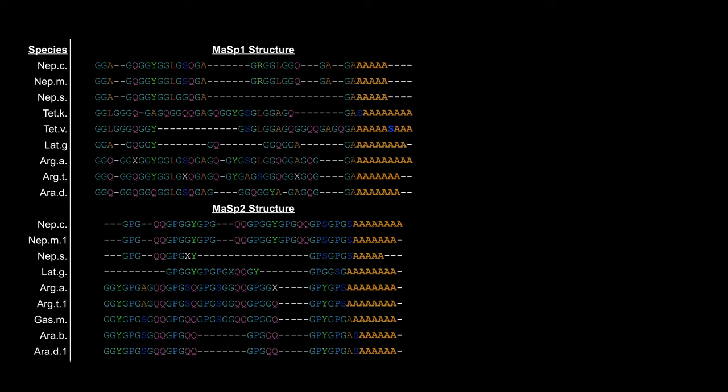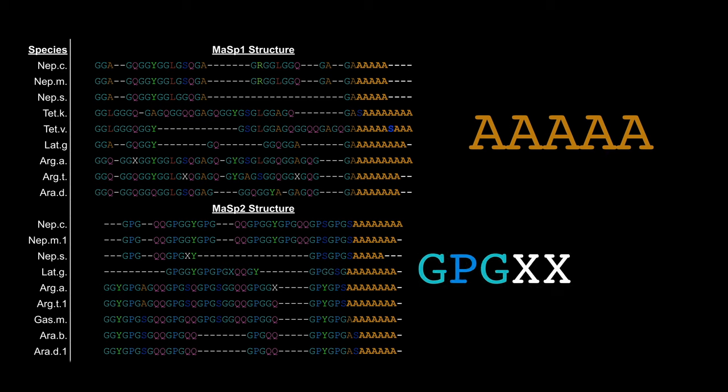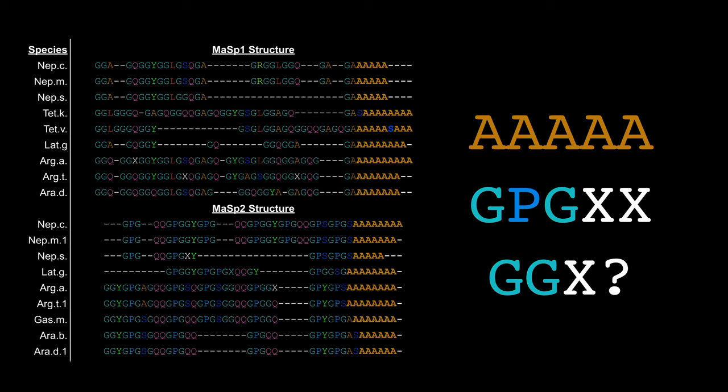It's clear to see that many of the sequences are highly conserved between species. The regions currently considered most important in generating the properties of the silk are the polyalanine region in both proteins, and the GPGXX repeats in MaSp2, where X indicates any amino acid. It was thought initially that the GGX regions in MaSp1 were primarily responsible for the elasticity of dragline silk. However, the more likely candidates for this are the GPGXX regions in MaSp2.